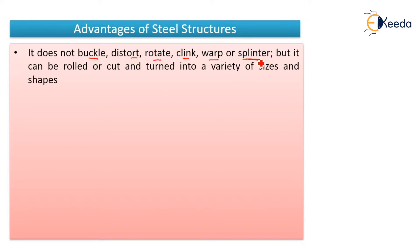In short, steel structures will not easily buckle or get their shape distorted. Because of that, we can use steel for industrial sheds, steel water tanks, and gantry girders which have to carry very heavy loads.